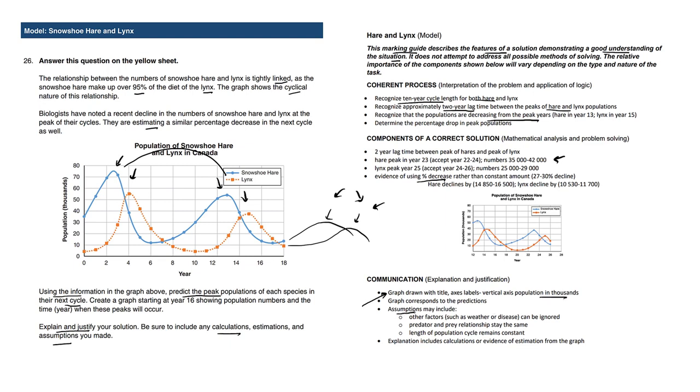And some good assumptions to state is that the predator-prey relationship stays the same. We're assuming that the diet of the lynx is still 95% and they're tightly linked and that the cycle remains constant.